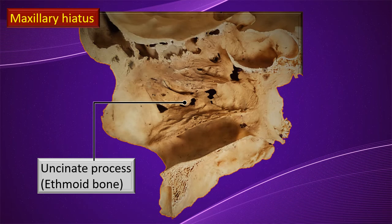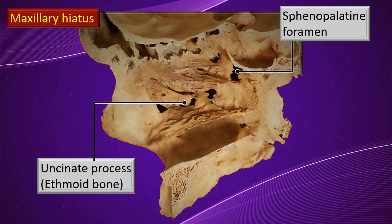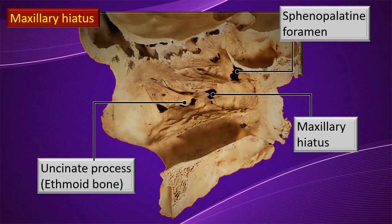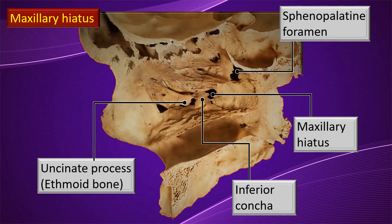The contributors that reduce the size of the maxillary hiatus include the uncinate process of the ethmoid bone — a projecting piece of bone going downward in the middle meatus. The sphenopalatine is again noted for reference. The inferior concha also makes a small contribution at its attachment to the maxilla along the lower margin. A lacrimal bone contribution is also mentioned in textbooks, though a photograph to demonstrate it is not available here.